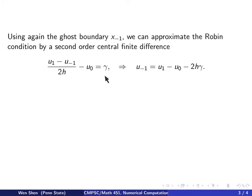That shall equal gamma. And then we treat u minus 1, the ghost value, as unknown, and solve this and write u minus 1 in terms of the other variables.